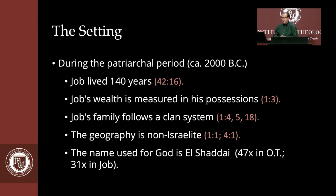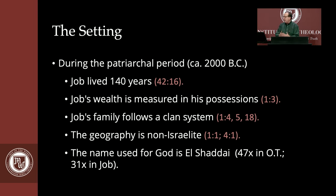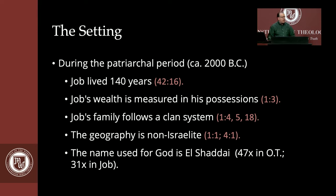How do we know the setting is patriarchal? Several reasons. Job lives for 140 years, which connects to that era. Job's wealth is measured in possessions. Job's family follows a clan system. The geography given in Job is non-Israelite. And the name used for God in Job is El Shaddai — 47 times in the Old Testament, but 31 times in the book of Job. All of those things help us date the setting to the patriarchal period.